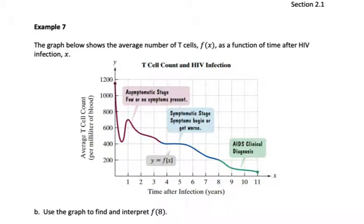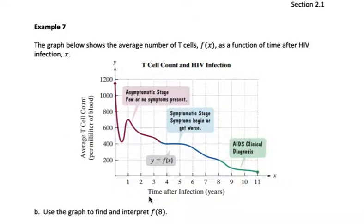In this video, we're going to continue with section 2.1. We're going to start with example 7. Example 7 shows a graph that shows the average number of T-cells, f of x, as a function of time after HIV infection, x. So on the x-axis, we have time after infection in years. On the y-axis, we have average T-cell count.